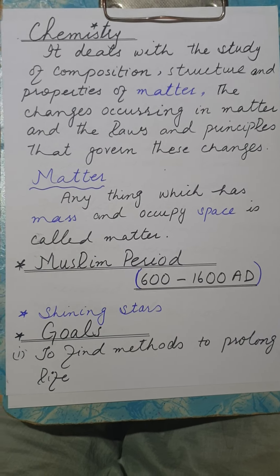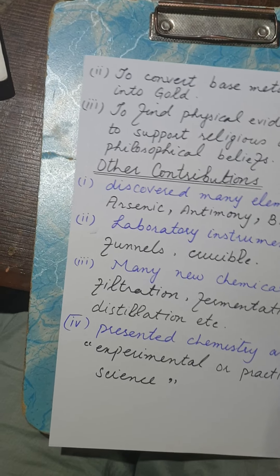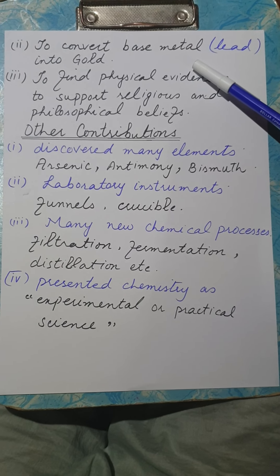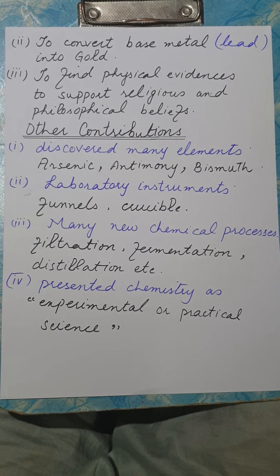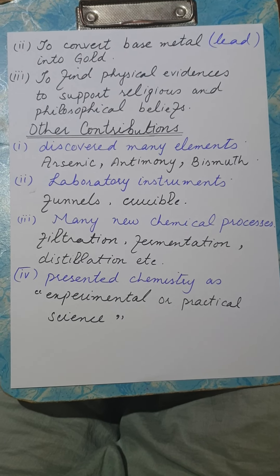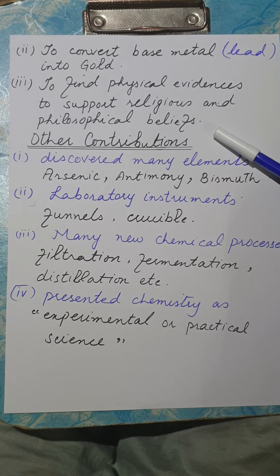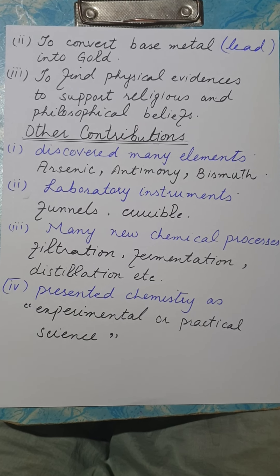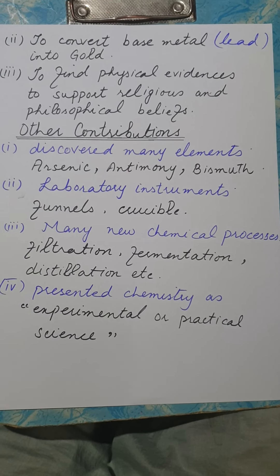Muslim scientists did a lot of work related to diseases and medicines in their time. The second goal was the conversion of base metals into gold. The third point was to find physical evidence to support religious and philosophical beliefs. Muslim scientists did a lot of work in this aspect as well.